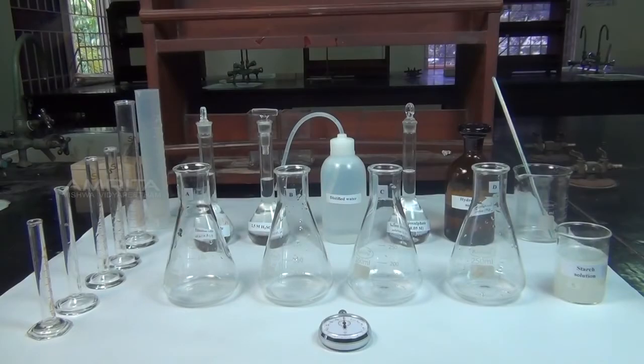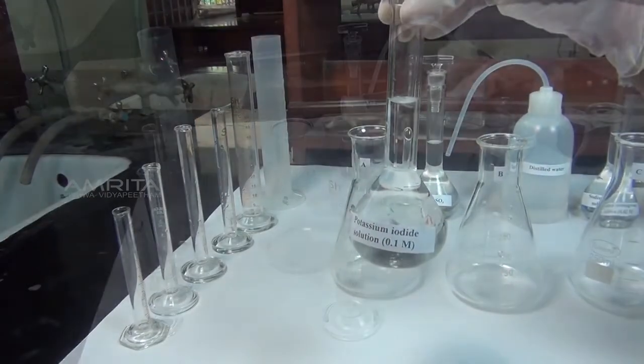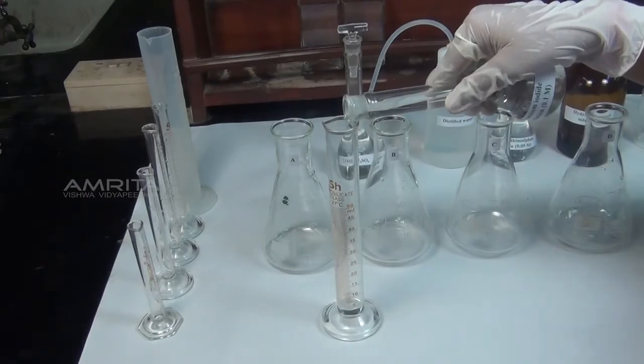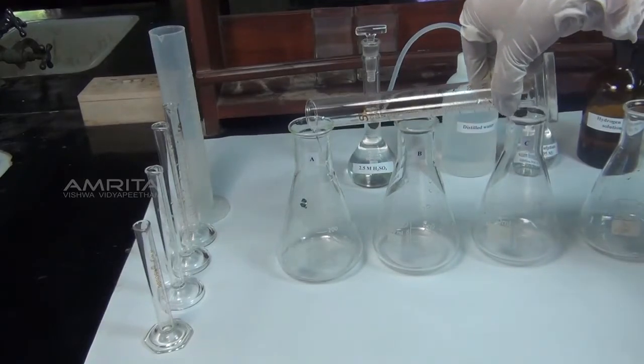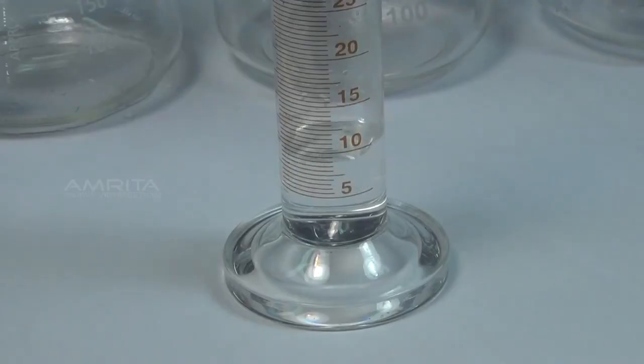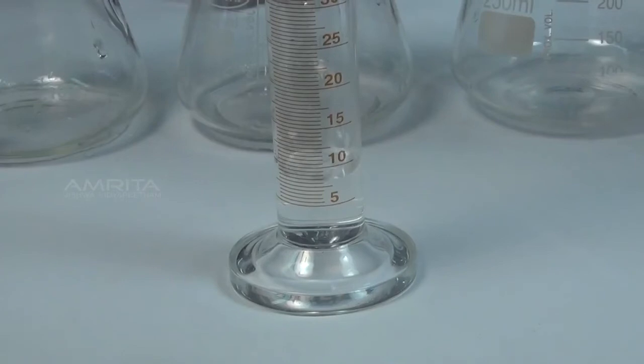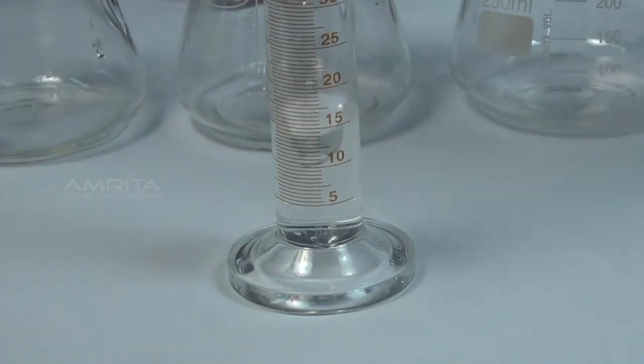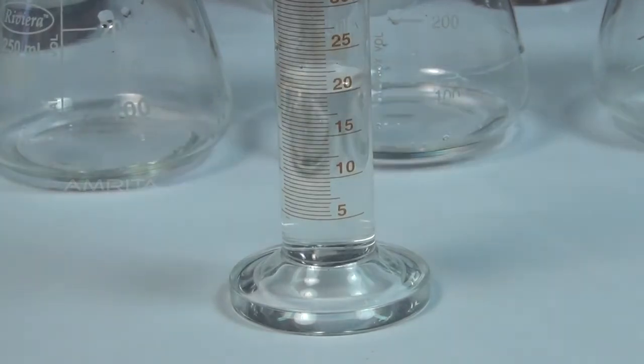Measure 5 ml of 0.1 molar potassium iodide solution in a measuring cylinder and transfer it into flask A. Similarly, add 10 ml of potassium iodide solution to flask B, 15 ml to flask C, and 20 ml to flask D respectively using the measuring cylinder.